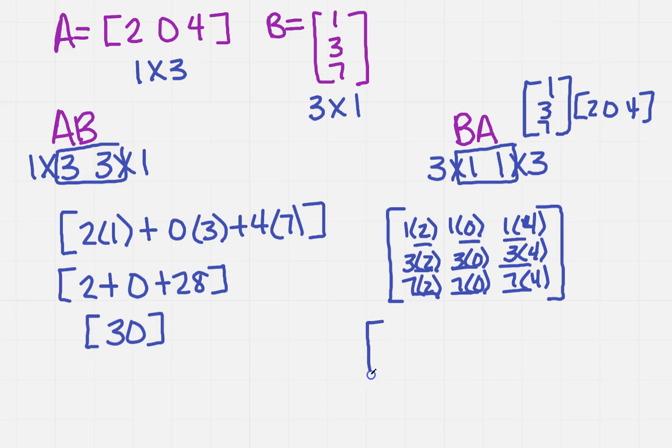First couple times you do it, it's like, what? And then you go, oh yeah, totally get it. So I need to simplify, so I get 2, 0, 4, 6, 0, 12, 14, 0, 28.